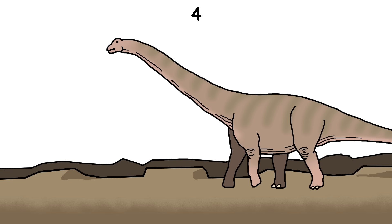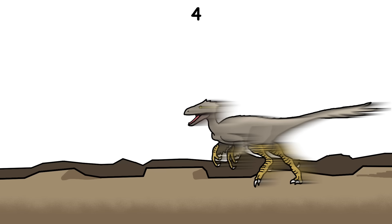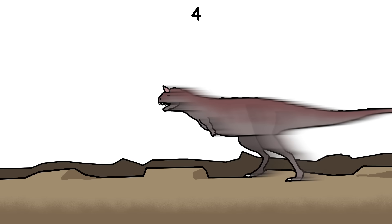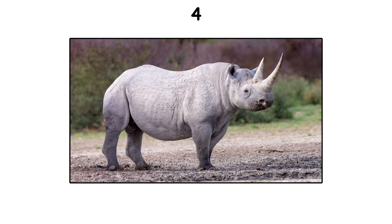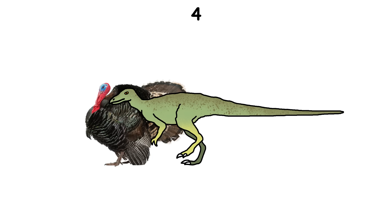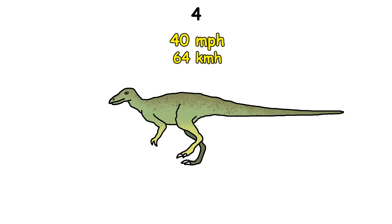People used to think dinosaurs were slow and clumsy. In reality, many of them were fast and athletic. Carnotaurus could run up to 35 miles per hour, faster than Usain Bolt, and weighed as much as a rhino. Compsognathus, a turkey-sized predator, may have hit 40 miles per hour.